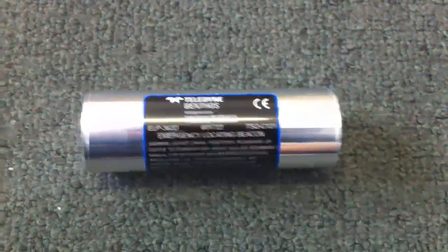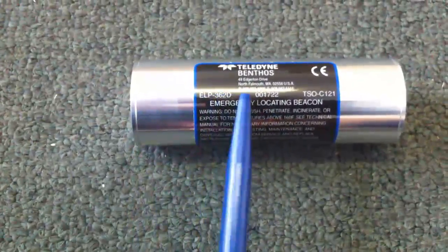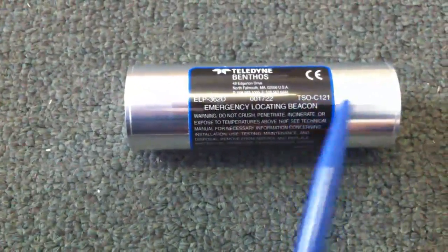So this is what it looks like, and basically inside there's a battery from about here to here, and the rest of it is the actual acoustic beacon.